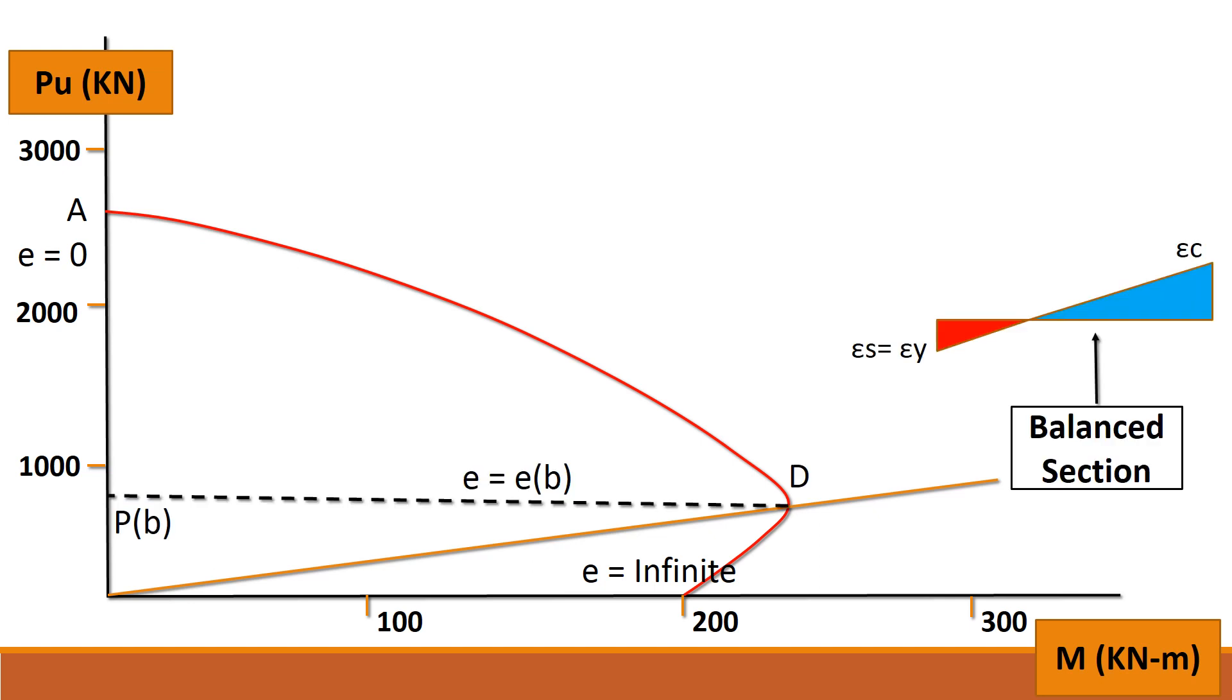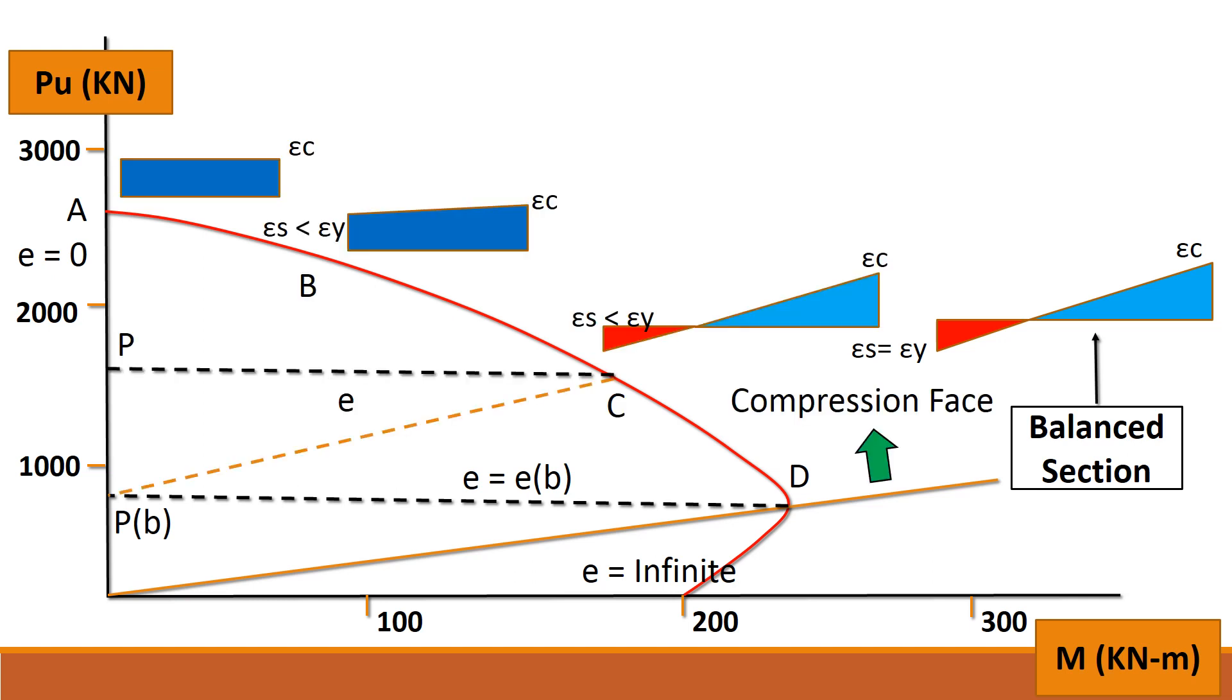For a balanced section, eccentricity E equals EB. For compression on the whole column section, with the shift in the neutral axis towards the center of the section, eccentricity would be equal to 0 and the load would be axial. And there is full compression.